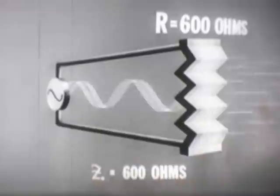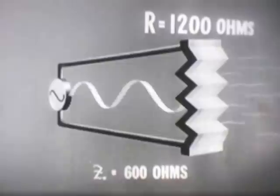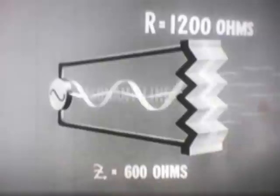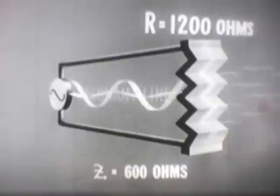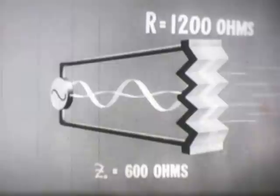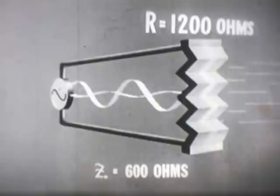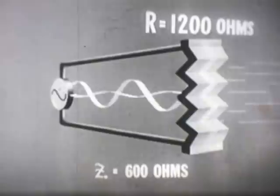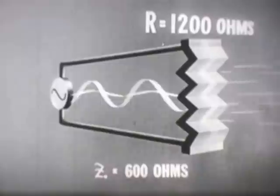This would not be the case if we were to change the value of the resistance across the line, say from 600 ohms to 1200 ohms. Now the resistance across the line does not match the characteristic impedance, and so we have a resonant line. When this mismatching occurs, some of the energy is reflected back down the line. The resistor does not dissipate all of the electrical energy applied to it.